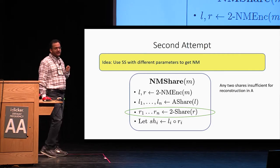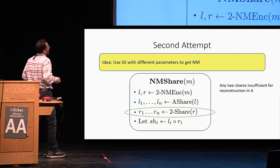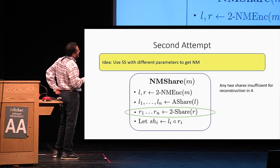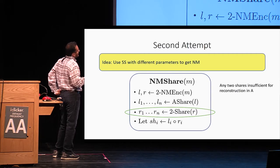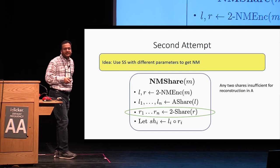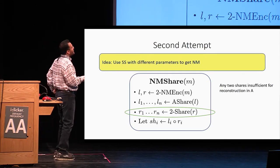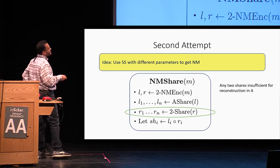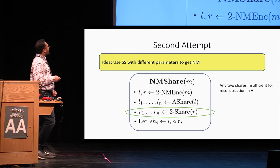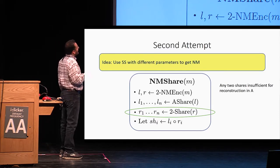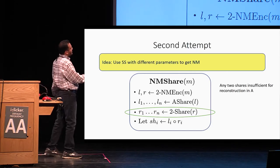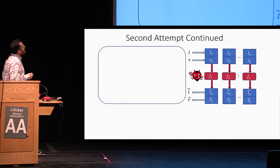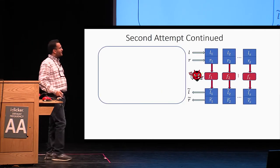To address this, we change the procedure slightly — everything else remains the same, except we now secret share the message R using a two-out-of-N secret sharing scheme. For simplicity, assume this is a T-out-of-N scheme where T is at least two, so any two shares are insufficient for reconstruction in A. It is important that the parameters of these two secret sharing schemes are different: for one, two shares suffice for reconstruction; for the other, two shares do not.